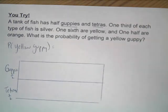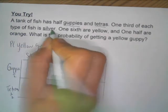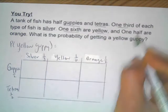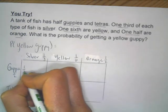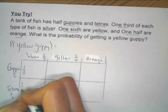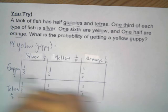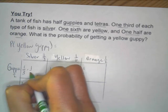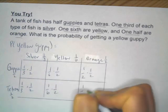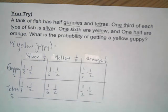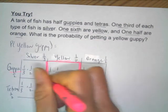Now let's look at the colors. Silver fish are one-third, yellow are one-sixth, and orange are one-half. Filling in the table: silver is one-third across, yellow is one-sixth across, orange is one-half across. Then one-half of each are guppies going this way, and the same for tetras — half are tetras. You can find any combination you're looking for, but we specifically want yellow and guppy.